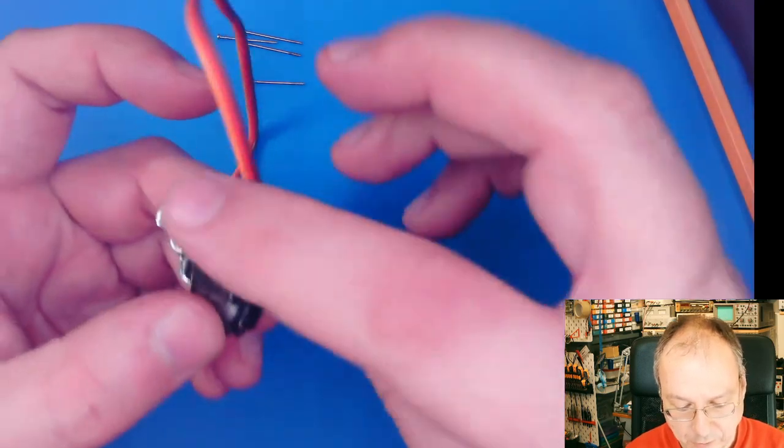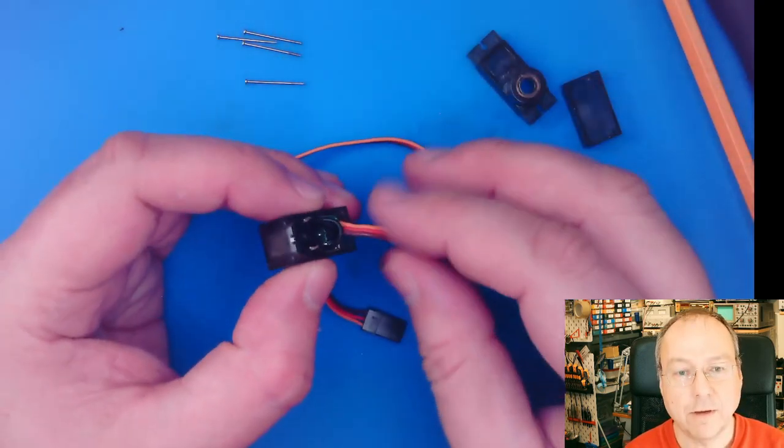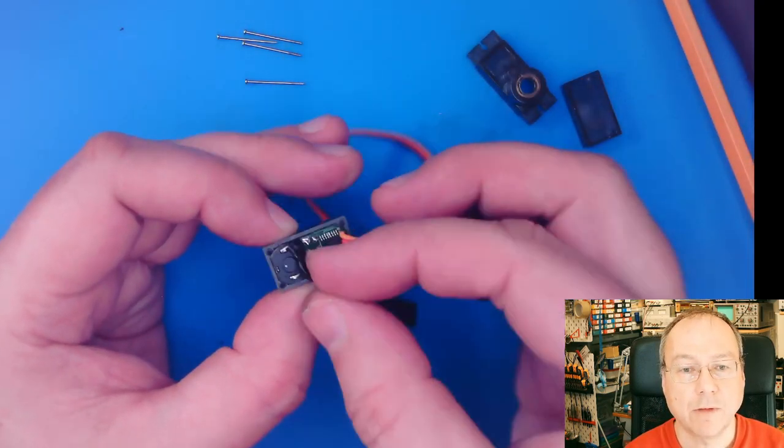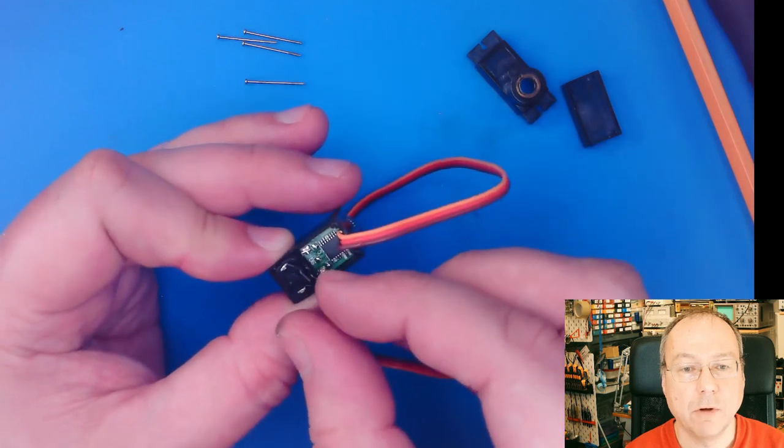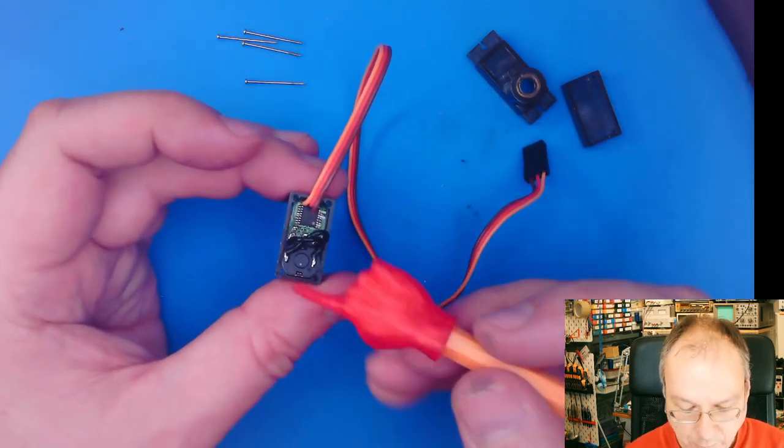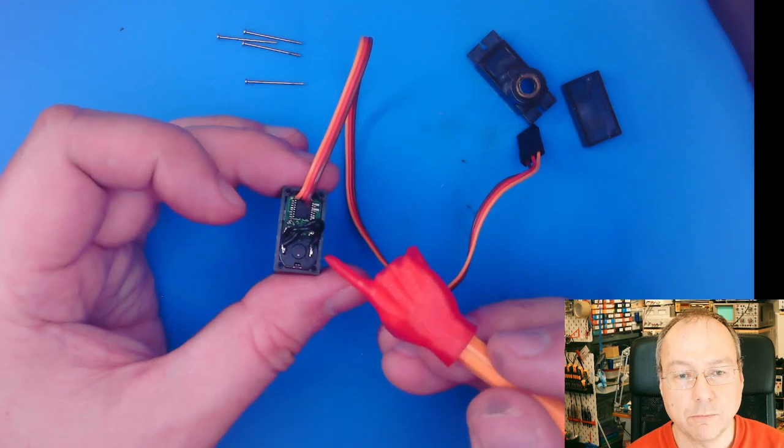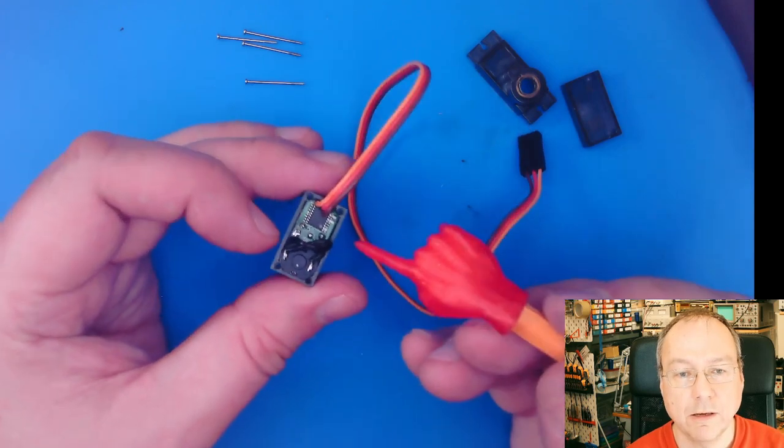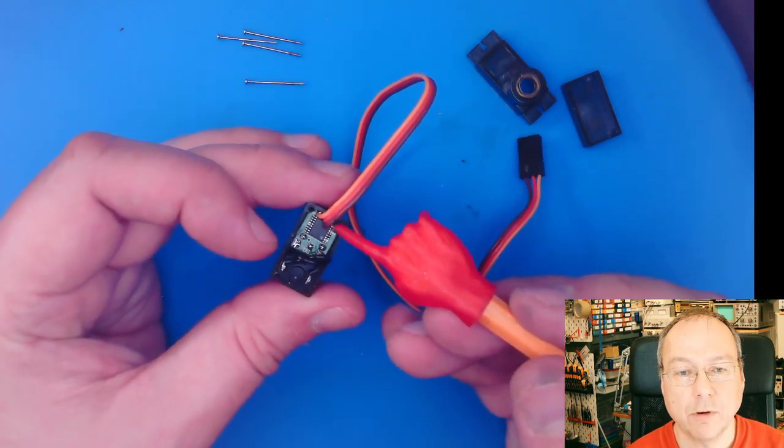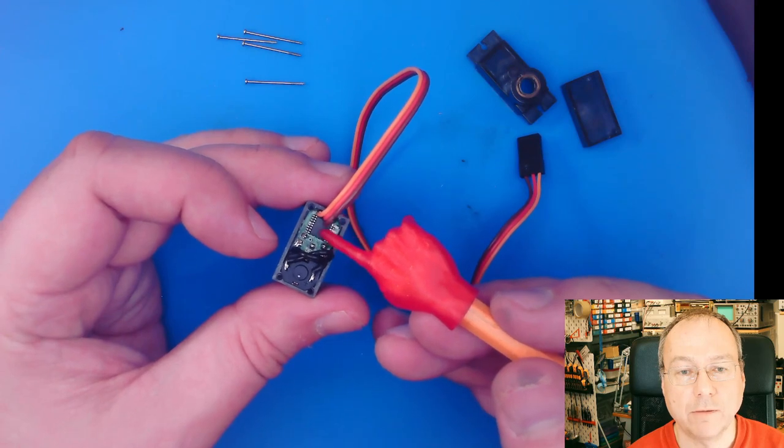If I take apart the lower section, then we can actually see the bottom side of the DC motor here. The DC motor has two poles, two connectors here and here, and we have a circuit board down here with a single chip.